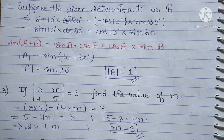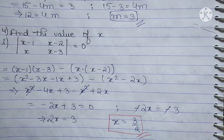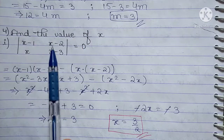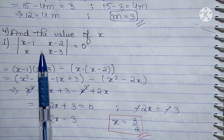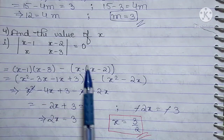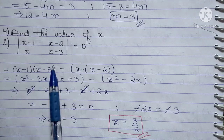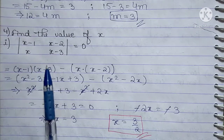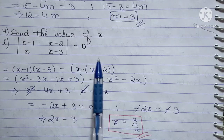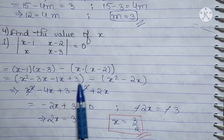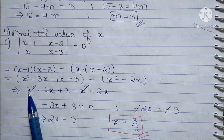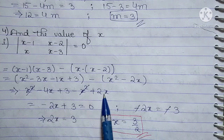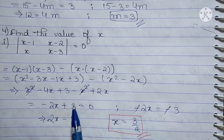Question 4 is same as Question 3 but requires a little more simplification. Find the value of X — the determinant is equal to 0. We expand: (x−1)(x−3) minus x(x−2) = 0. Simplifying: opening the brackets and collecting terms, the minus sign changes signs inside the bracket, giving minus x² plus 2x, then combining like terms we get minus 2x plus 3 = 0.